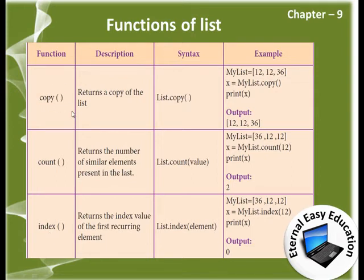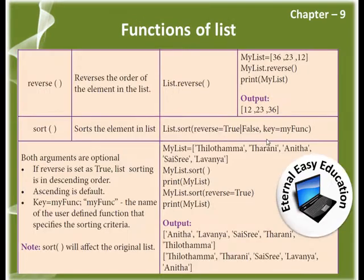Copy is used to make a copy of a list. Count is used to count the occurrence — it returns the number of similar elements present in the list. Index returns the index value of the first occurrence of the element. Reverse reverses the order of elements in the list.